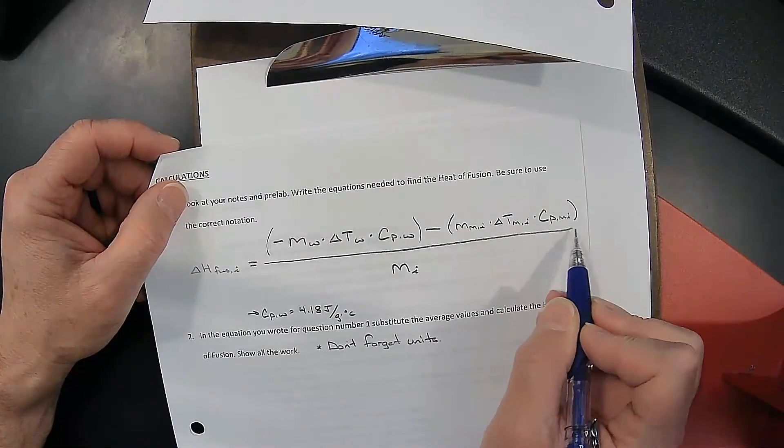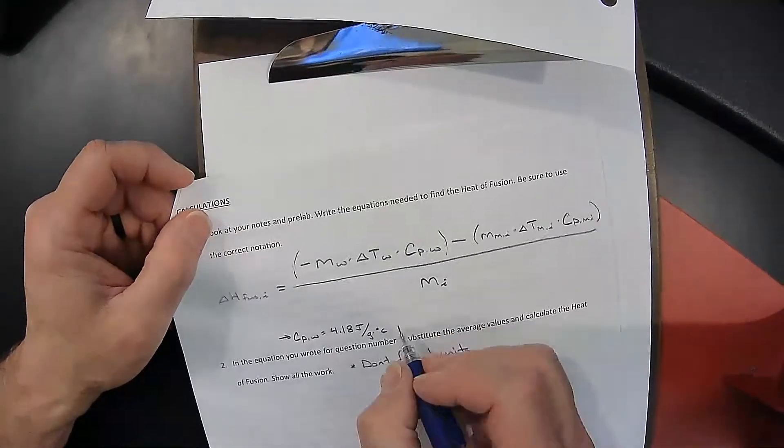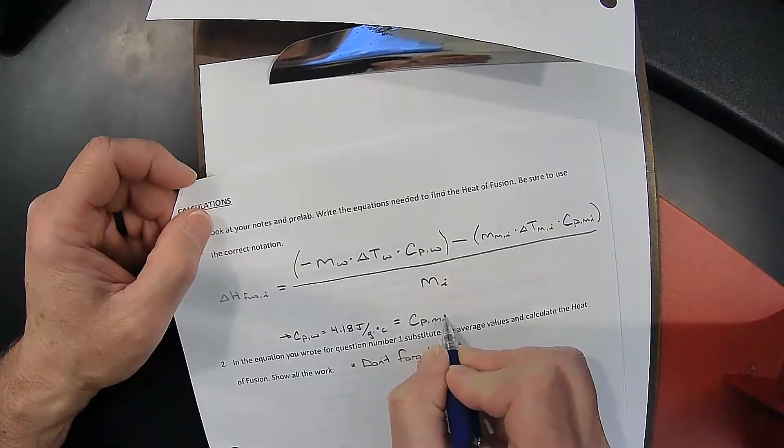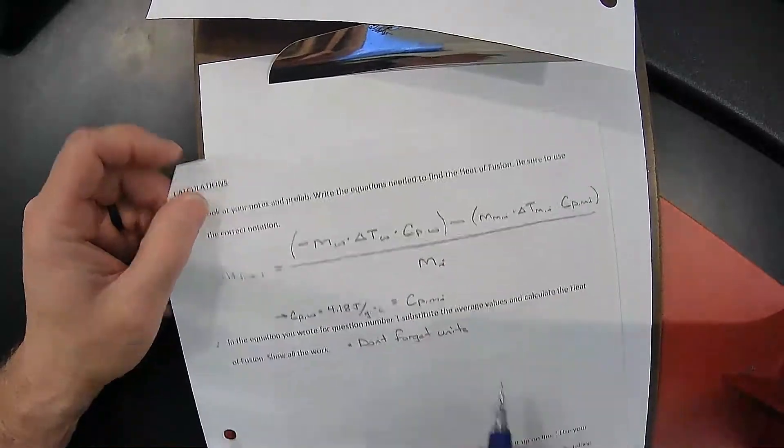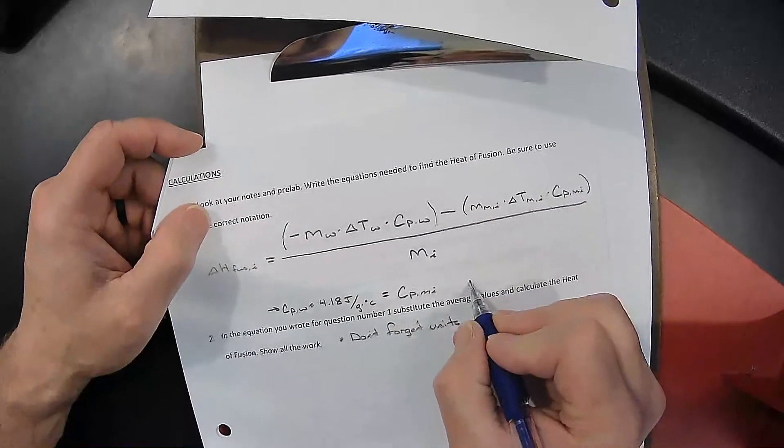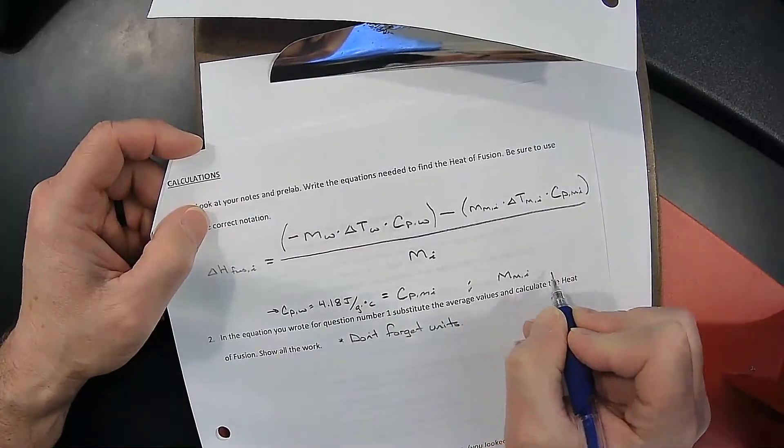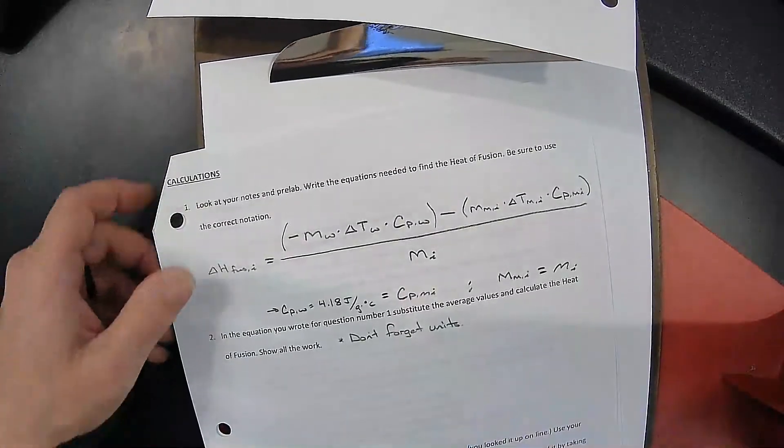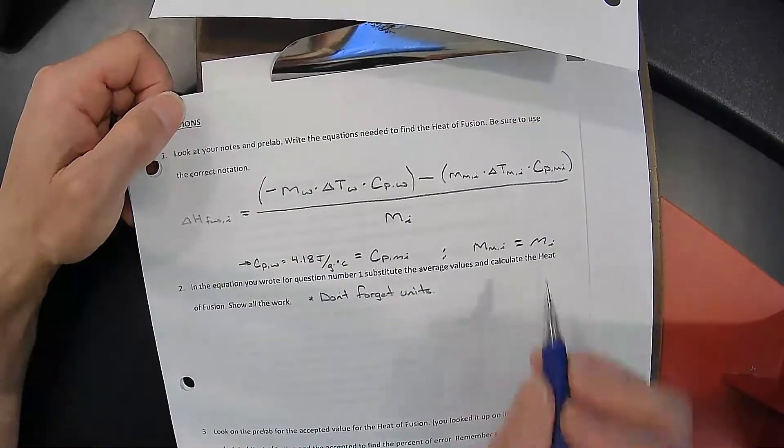The C_p value of the melted ice. This is water. So the C_p value is also equal, the C_p of the melted ice is also equal to the 4.18 here. Then the mass of the melted ice is the same here. So the mass of the melted ice is equivalent to the mass of the ice. They're the same exact thing. The ice melted and turned into melted ice.